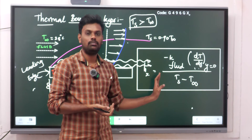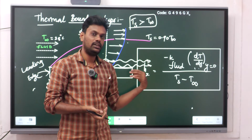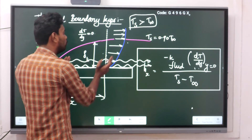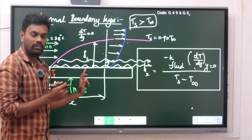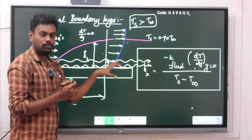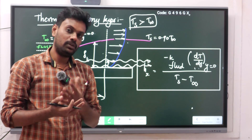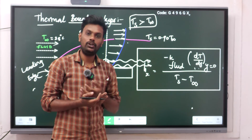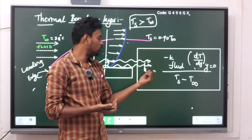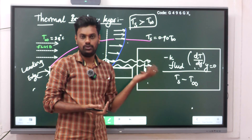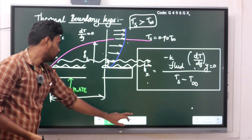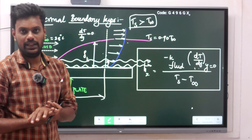This is a very important formula — in GATE examinations many numericals are asked using this formula. They will give you a flat plate problem with fluid flowing over it, provide the temperature profile showing how fluid temperature varies in the y direction, along with the plate and fluid temperatures, and ask you to find the heat transfer coefficient hx. Sometimes they give hx and ask for another value. It is a direct formula method, but understanding the concept is essential. That is all for thermal boundary layer — thank you.